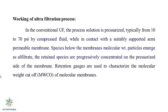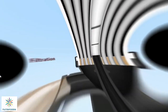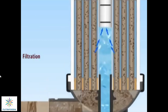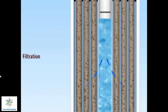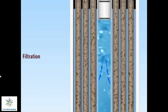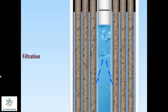In conventional ultrafiltration, the process solution is pressurized, typically from 10 to 70 psi, by compressed fluid. While in contact with a suitably supported semi-permeable membrane, species below the membrane's molecular weight cutoff emerge as permeate. The retained species are progressively concentrated on the pressurized side of the membrane. Retention values are used to characterize the molecular weight cutoff of the membrane.